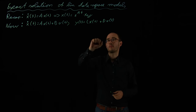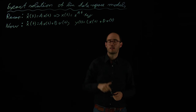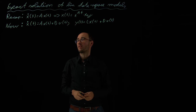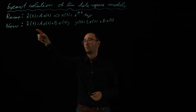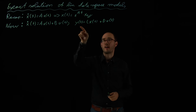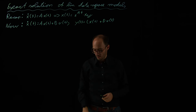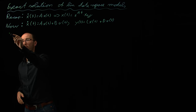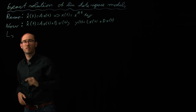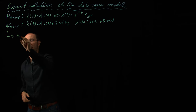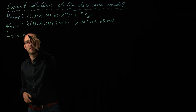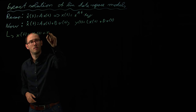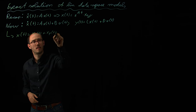In this video we are basically going to extend our analytical solution with the matrix exponential approach for the autonomous linear state space model towards the state space model with inputs and outputs. In order to do that we utilize a classical approach from differential calculus where we come up with an ansatz equation: x(t) is equal to x_h(t), the homogeneous solution, plus x_p(t), the particular solution.